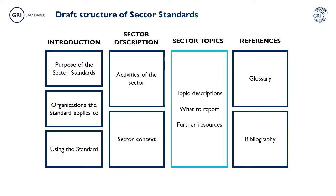The third section, Sector Topics, is the core of the Sector Standard. This section describes the topics that have been identified as likely material for an organisation in the sector. It explains why the topic might be material, outlining significant impacts and how these impacts occur, as well as drawing on international instruments and other supporting references. It also lists disclosures identified as appropriate for reporting on the topic, as well as providing resources that can assist an organisation with its reporting. Finally, the glossary provides a list of defined terms used in the Sector Standard, and the bibliography includes all of the references that were used to develop the content.